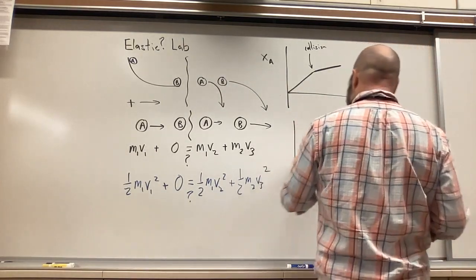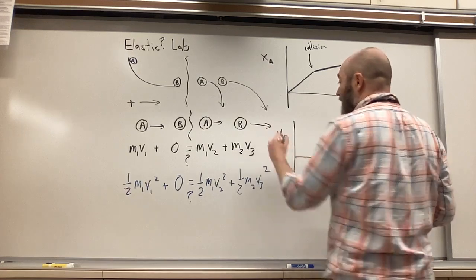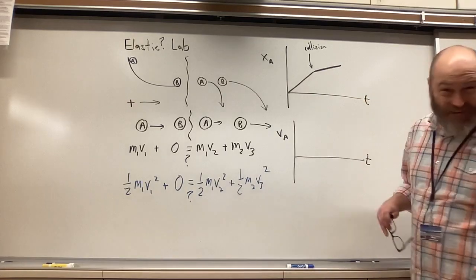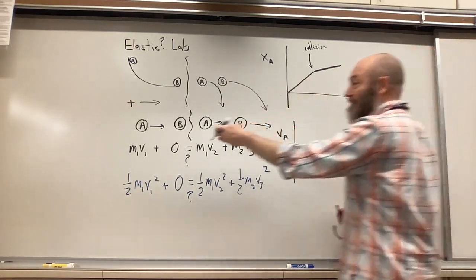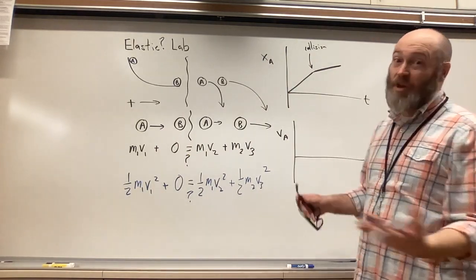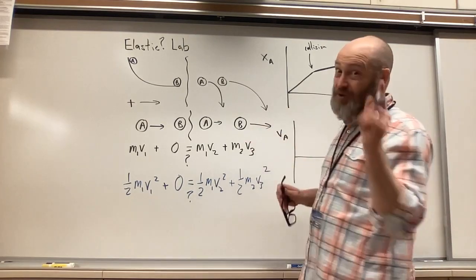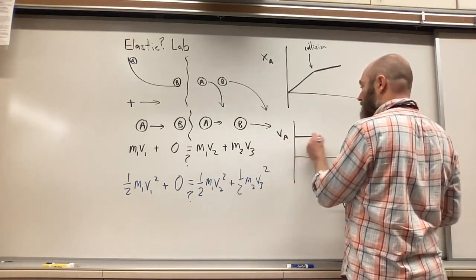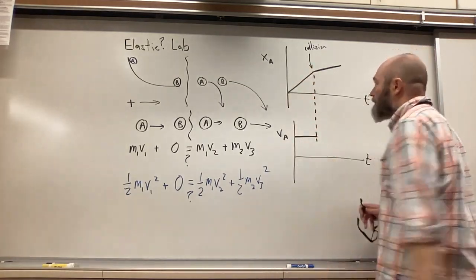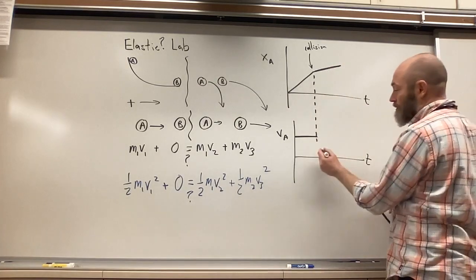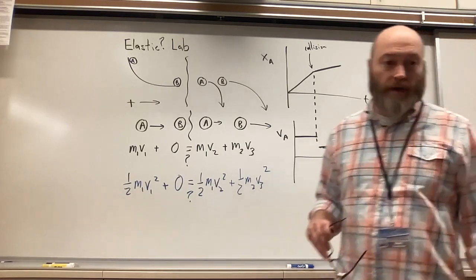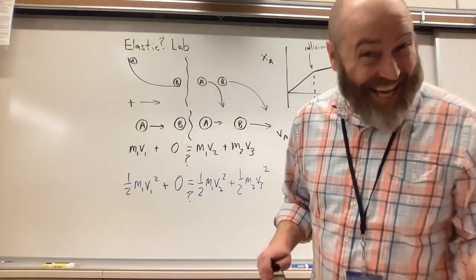If the question asks for a graph of the velocity of marble A versus time: the velocity before the collision was constant — say two meters per second — so you'd have a flat horizontal line at two m/s. Then after the collision it slowed down but was still constant and still moving the same direction, so you'd have a lower flat horizontal line.